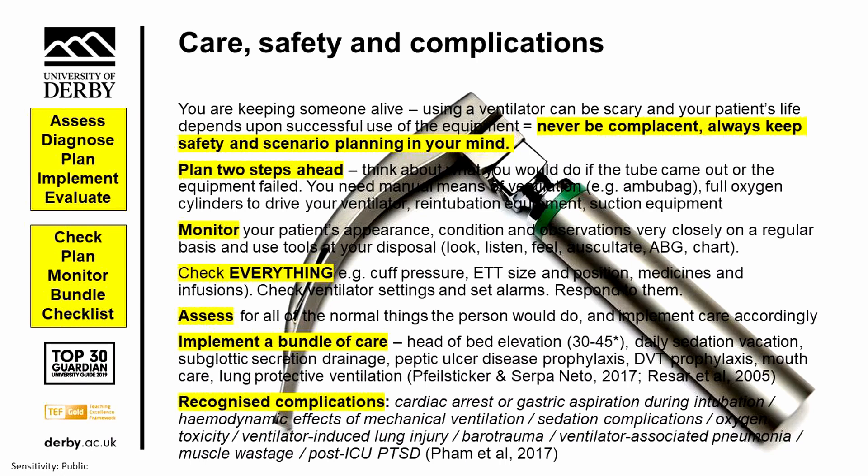Regarding care, safety and complications for someone on a ventilator — you are keeping somebody alive. A ventilator replaces the breathing function that somebody would normally have, and that can be quite scary. Their life is in your hands and it's dependent upon successful use of the equipment. So never be complacent about the equipment you are using — always be trained, keep safety at the forefront of your mind, and think about scenarios that could happen. Intensive care nurses plan two or three steps ahead: think, if the tube came out now, what would I need to put it back in? You might run out of oxygen or power, so you need to plan for those things too.